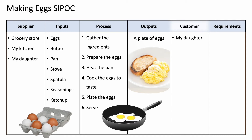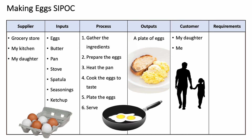The customer is my daughter and me, because I too might want some of those eggs. You'll notice on the far right there's a requirements column. In my courses, I like to talk about what does the customer really want — we call that the voice of the customer. For the process to be successful in the eyes of the customer, in this case my daughter, her requirements are: the eggs have to be scrambled, they've got to be hot, and they have to be served with ketchup.